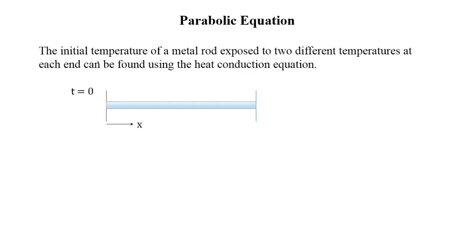Let's recall the example of a parabolic equation which we considered by classifying the second order linear partial differential equation. This is the metal rod which is exposed to two different boundary conditions at two different ends. For example, the left end is maintained at a hot temperature, let's say 100 degrees Celsius, and the right end is maintained at a relatively low temperature, let's say 25 degrees Celsius, and the initial temperature of this rod at time t equal to zero is let's say 20 degrees Celsius.